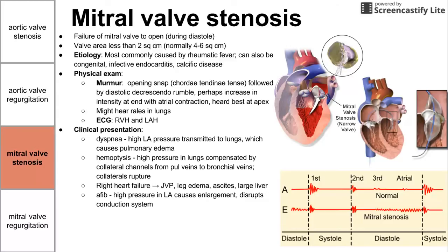AFib can happen too. If we're not able to pump blood from the left atria to the left ventricle, the left atria can get big. We can have stagnation of blood, and the enlargement of the left atria can cause conduction problems leading to atrial fibrillation. Stagnant blood can also embolize and cause clots, leading to a stroke. Patients who have AFib related to mitral valve stenosis should be on anticoagulants.